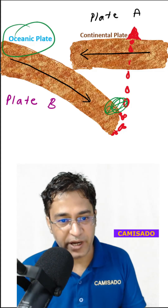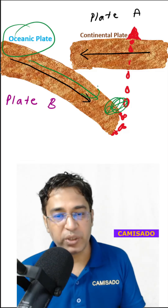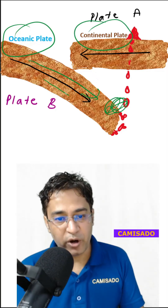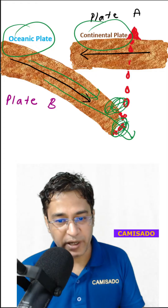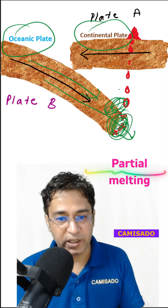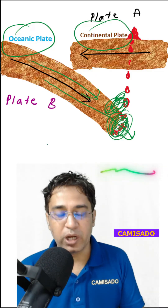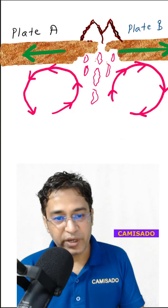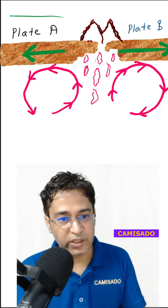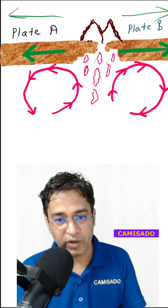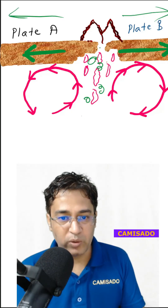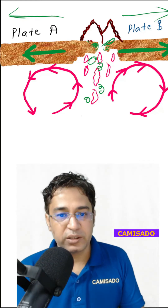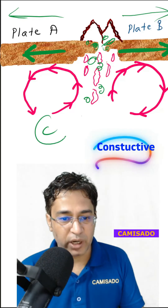These kind of plate boundaries where crustal material is getting destroyed — because this oceanic plate is subsiding; always remember that the oceanic plate is heavier than the continental plate, therefore it subsides and ultimately undergoes melting — are called destructive plate boundaries. Whereas these kind of plate boundaries where the two plates are moving away from one another and magma coming from below is solidifying and creating new crustal material are called constructive plate boundaries.